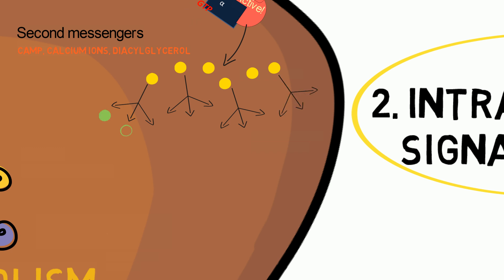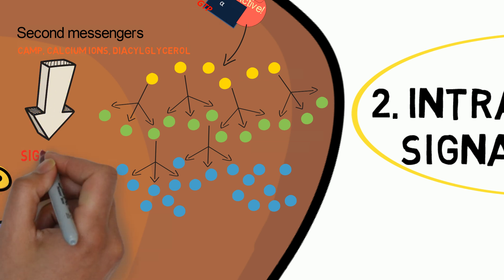Large amounts of second messengers can activate large numbers of downstream intracellular signaling proteins which relay the signal to the next protein in the pathway and so on. This causes the signal to be amplified.